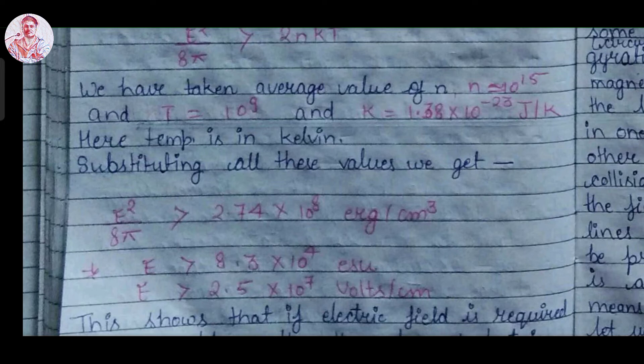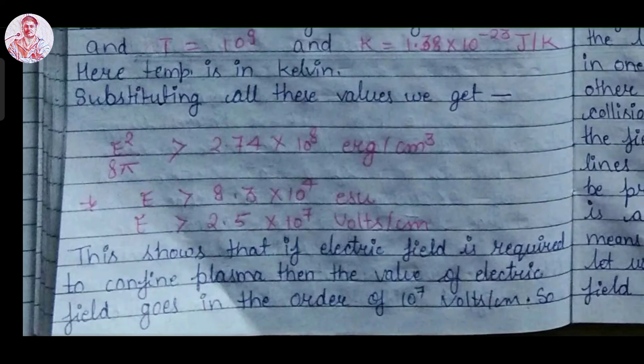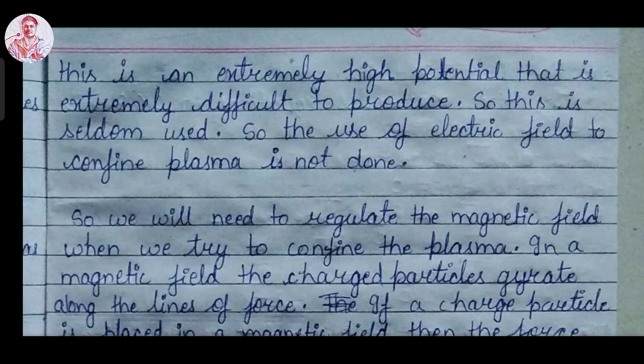Since 1 Joule equals 10 to the power 7 erg, after solving we get E greater than 8.3 into 10 to the power 4 ESU (electrostatic units), and thereafter E greater than 2.5 into 10 to the power 7 volts per centimeter. This shows that the electric field required to confine plasma is of the order of 10 to the power 7 volts per centimeter, which is an extremely high potential that is extremely difficult to produce. So this technique is seldom used.